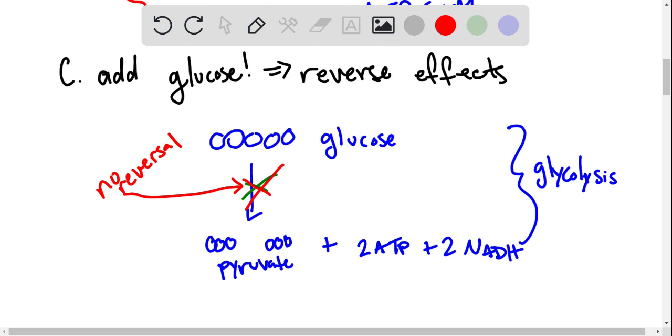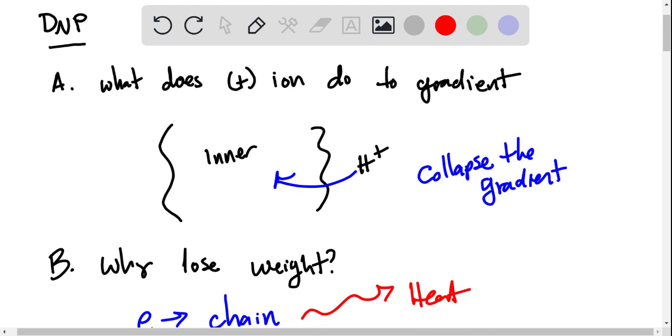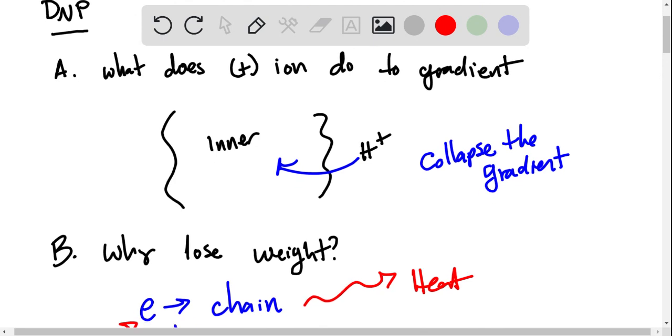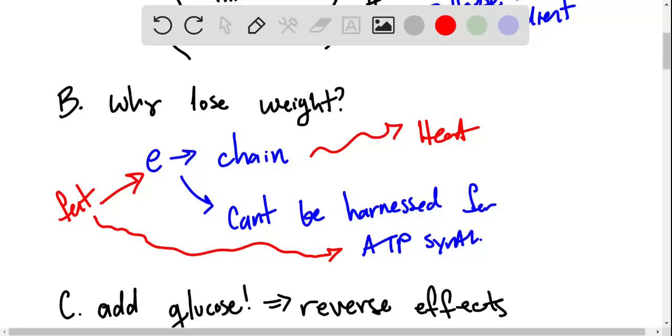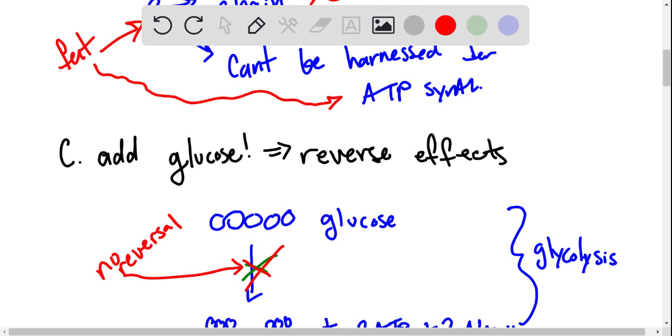Okay, well, if we recall, the DNP from above is basically stopping us from storing ATP, which means that we are producing a lot of heat instead of energy in the traditional way.